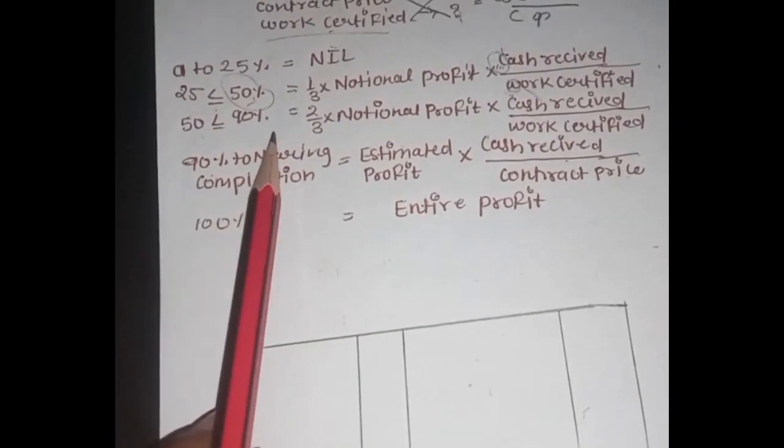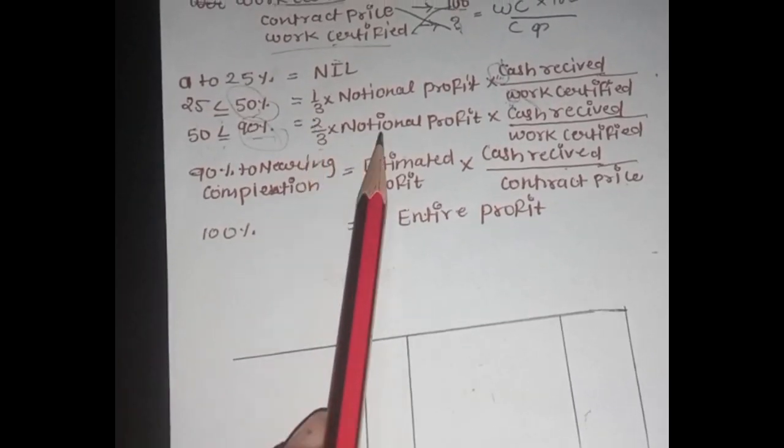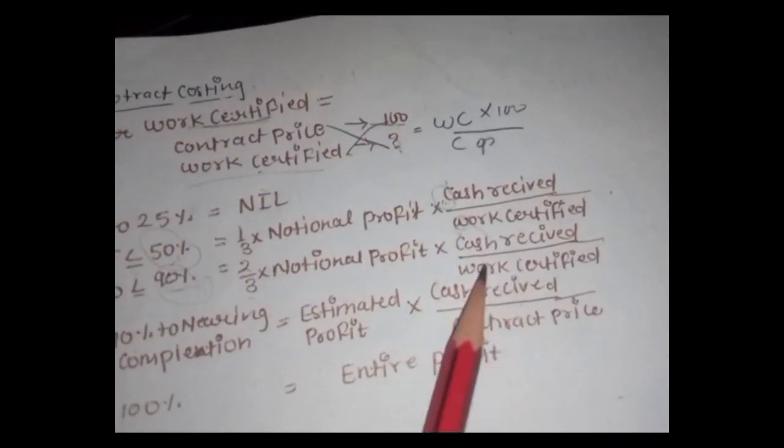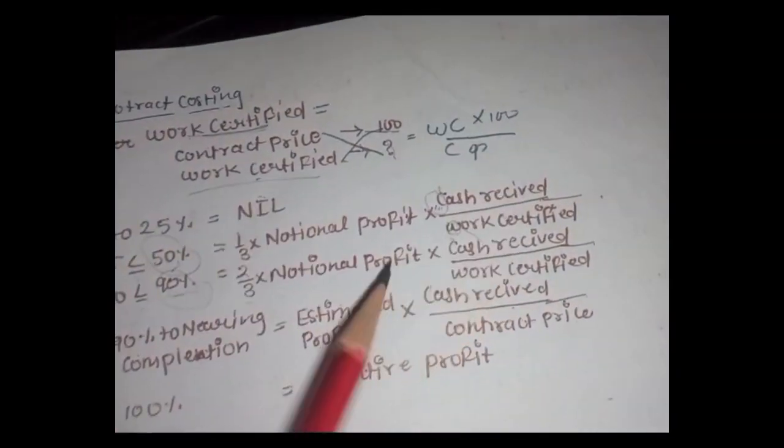50% to 90%, up to 90%, it is 2/3, 2/3 notional profit, cash received upon work certified. Cash received upon work certified.